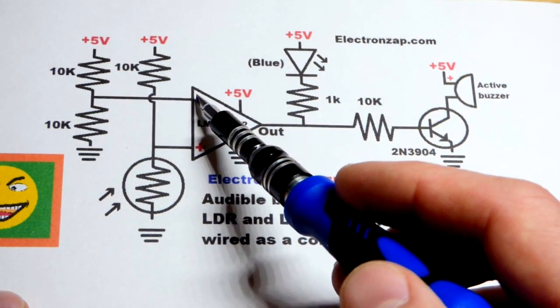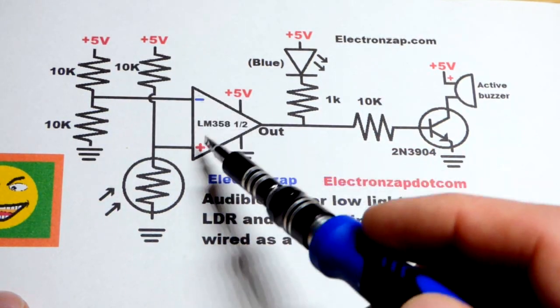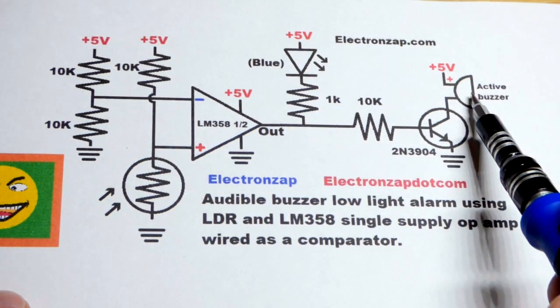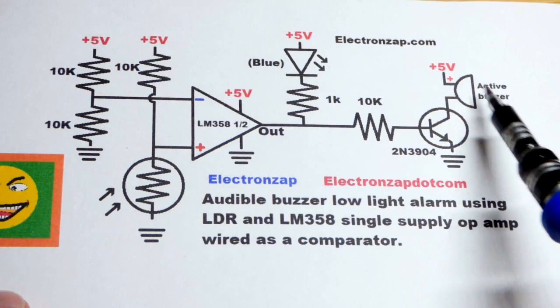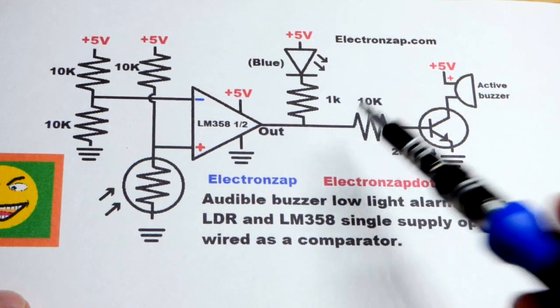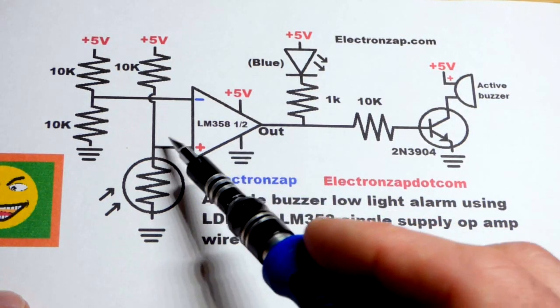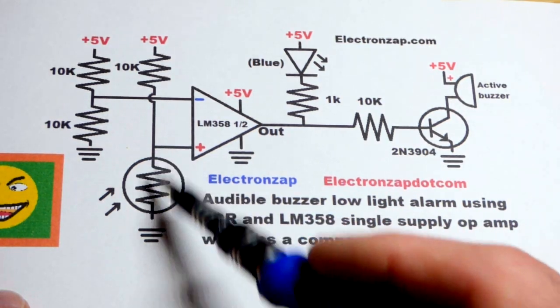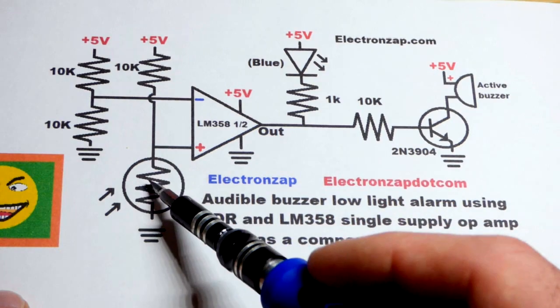But in any case, we set half of the supply voltage to the inverting input. We have the non-inverting input here. So I want this buzzer to go off. This is an active buzzer when the output goes high. And so to do that, we need very high resistance on the negative side right there. So that means it'll be dark.